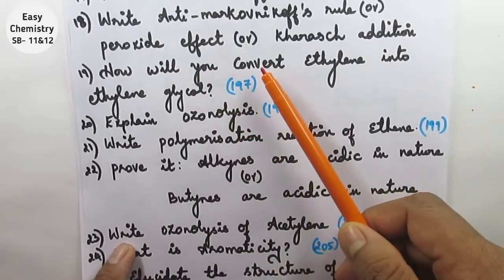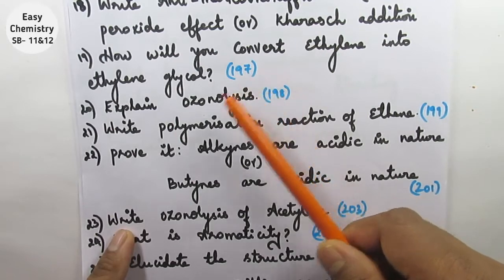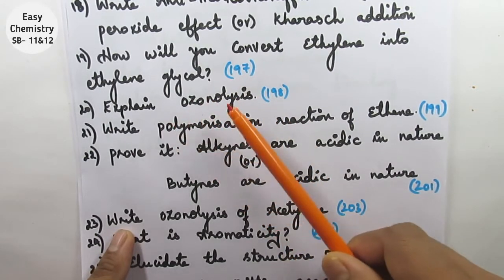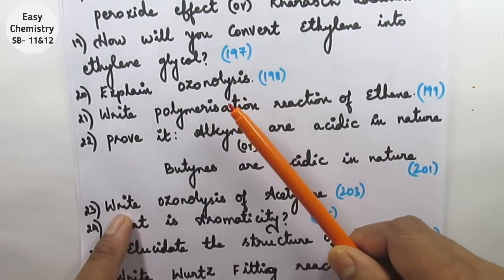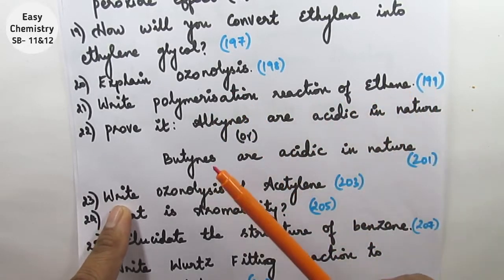Question number 19: How will you convert ethylene into ethylene glycol? It is page number 197. Question number 20: Explain ozonolysis. Question number 21: Write polymerization reaction of ethene.